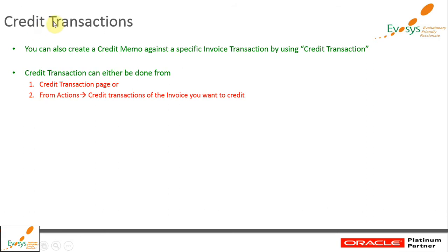The other type is a credit transaction, which is against a particular specific invoice billing transaction. A credit transaction can be done either from the credit transaction page, or by searching the invoice billing transaction which you want to credit and selecting credit transaction from the actions list of values.